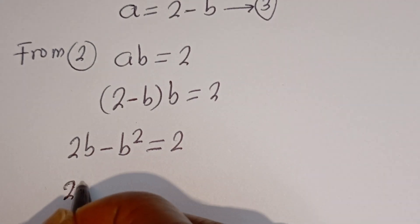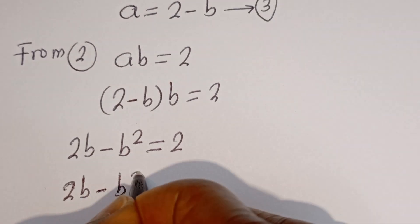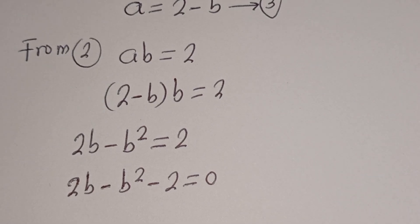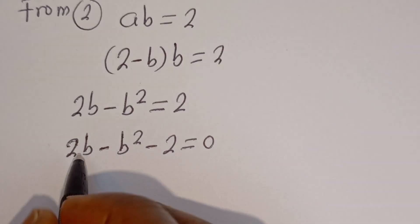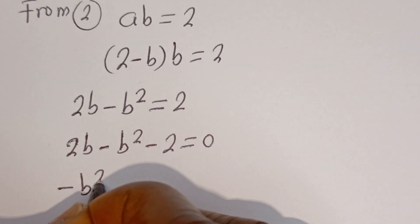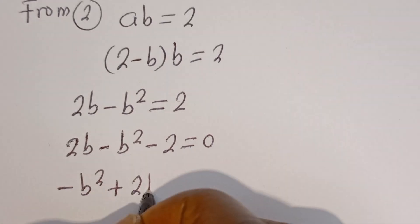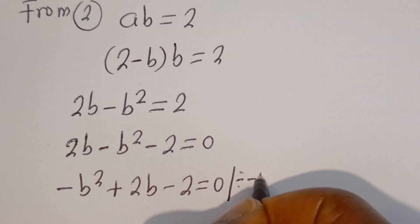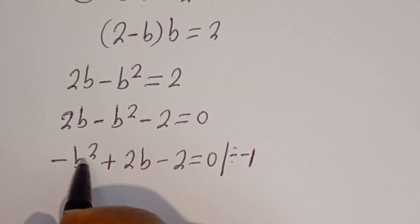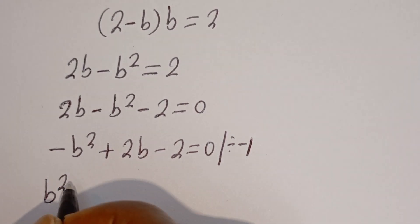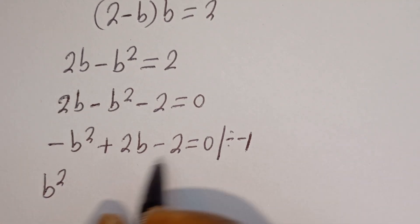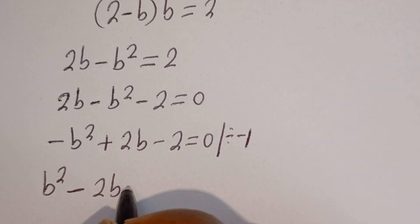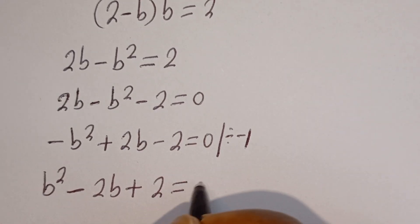Now we have 2B minus B squared minus 2 is equal to 0. Let's put this in standard form: minus B squared plus 2B minus 2 is equal to 0. Then we divide all terms by minus 1, giving us B squared minus 2B plus 2 is equal to 0.